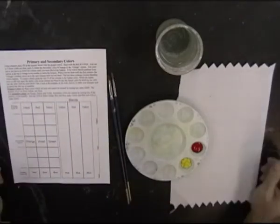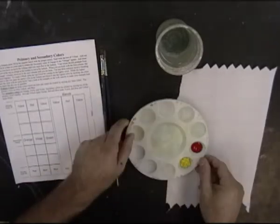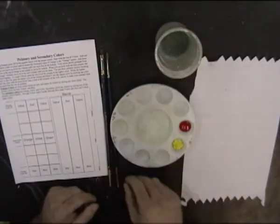Make sure you have a primary and secondary color chart and a round and flat brush of the proper size. You should also have a palette with yellow and red paint, a paper towel, and a water cup.